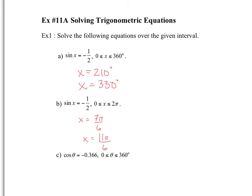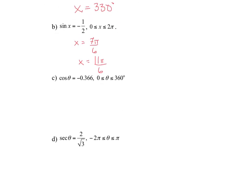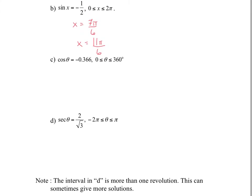So exact same solutions — this one's in radians, this one's in degrees. It really depends on the interval that it's given. Now, what if it's not exactly on the unit circle as the first two questions are? So cos equals negative 0.366 — you don't really know where that is on the unit circle, so this is one of those examples where you need to find the reference angle.